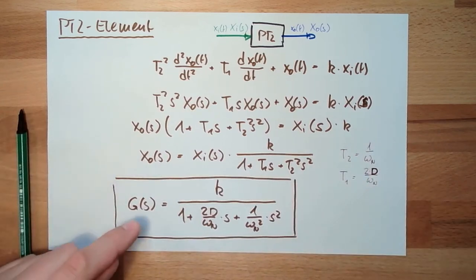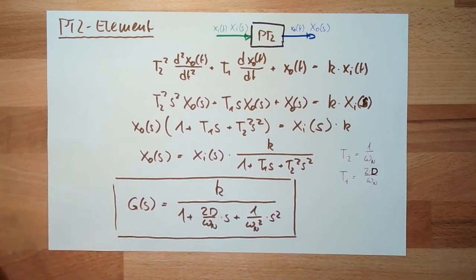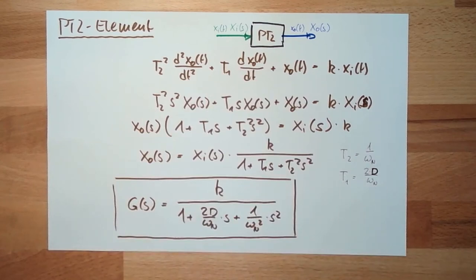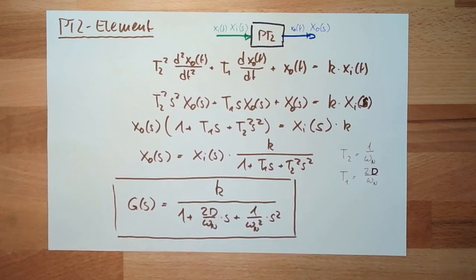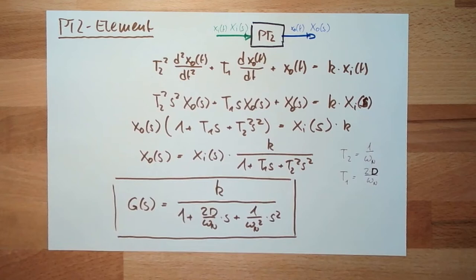We could do the math, look at j·omega, or we can also do the inverse Laplace transformation and look at what it looks like on a step response. Depending on d and omega_n — the damping and the natural frequency — this will look totally different. This is why I prepared something on the computer, an Excel sheet, to show you how things change when we change some parameters.